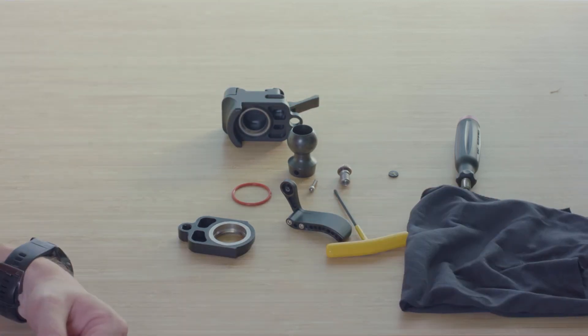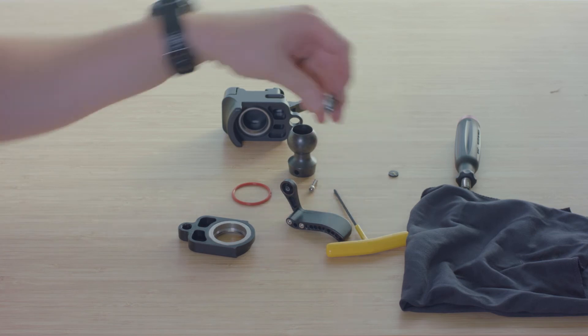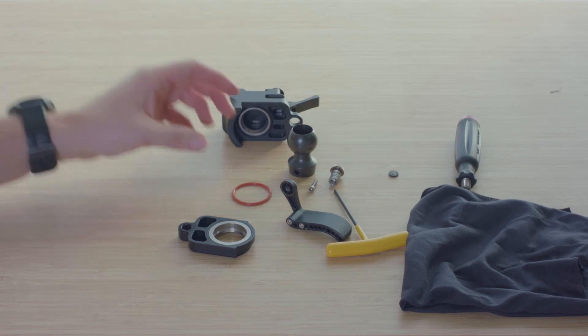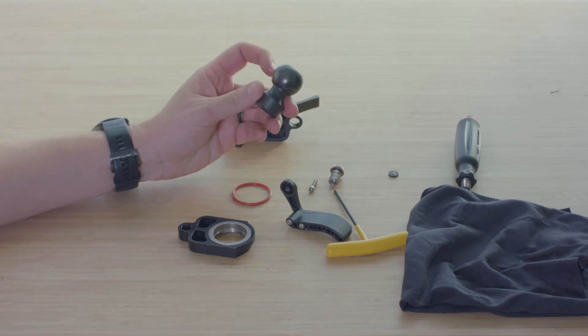You don't have to use oil, but if you want to, you can put a little bit of oil, or CLP, on the main screw, and then just on the outside of the ball.